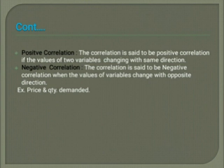The negative correlation: when the value of variables change in the opposite direction, it is called negative correlation. For example, price and quantity demanded. These are the two types of correlation: positive correlation and negative correlation.